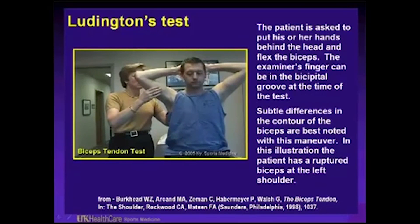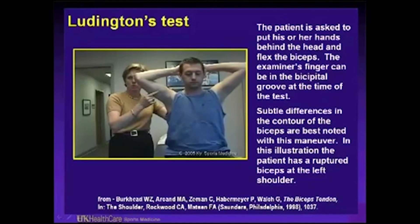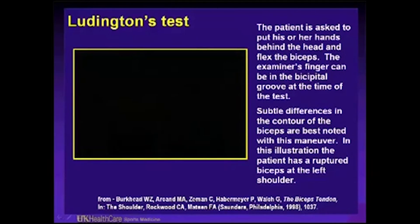Luden's test: hands are behind the head, and the patient is asked to flex the biceps while the examiner's finger is in the bicipital groove. Pain occurs when palpating the biceps in the groove as they perform a sit-up maneuver. There can be differences in contour of the biceps tendon with this maneuver. If there is an asymmetry, you must think about a biceps rupture — that Popeye deformity that we would see in a complete biceps tendon rupture, which oftentimes is spontaneous. The biceps is a pain generator.